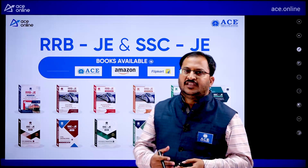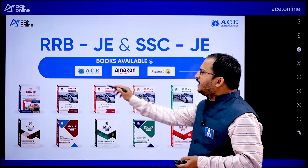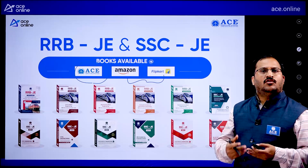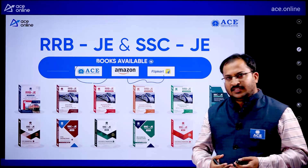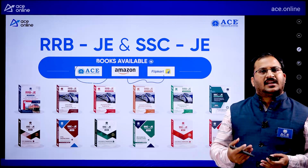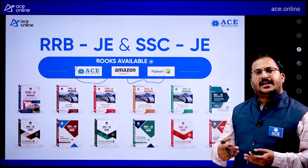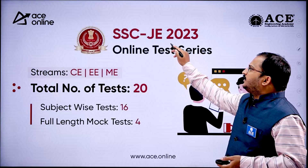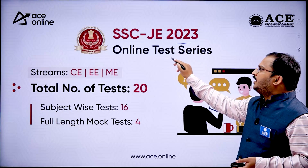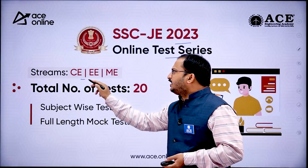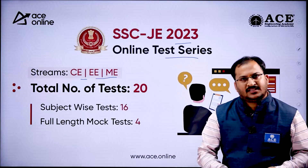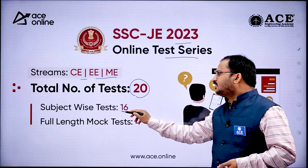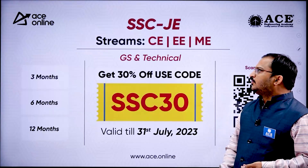RRB JE and SSC JE books are available on ACE Engineering Publications website, Amazon, and Flipkart. These include previous year question books for General Studies and technical subjects. Additionally, the SSC JE 2023 online test series is available for Civil, Electrical, and Mechanical engineering students, comprising a total of 20 tests: 16 subject-wise tests and 4 full-length mock tests.